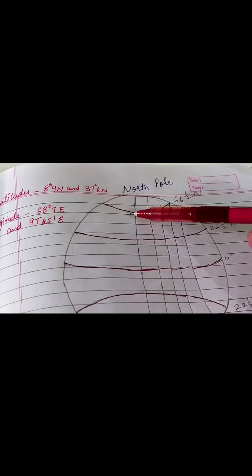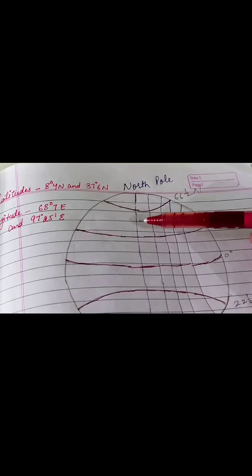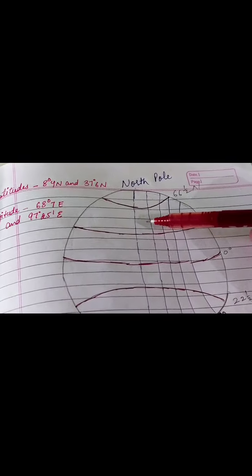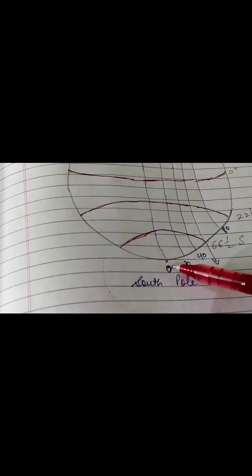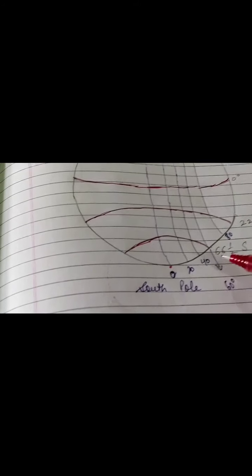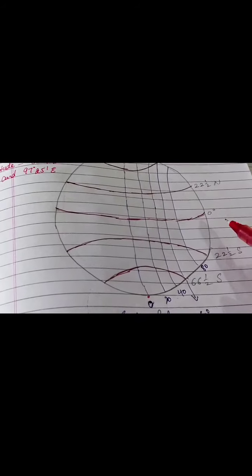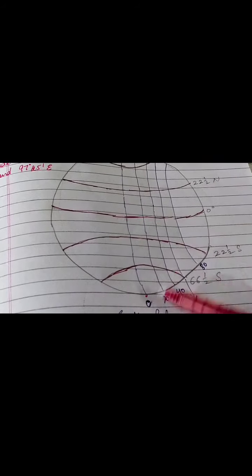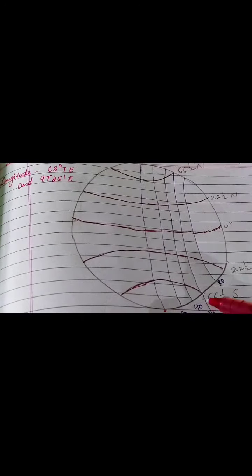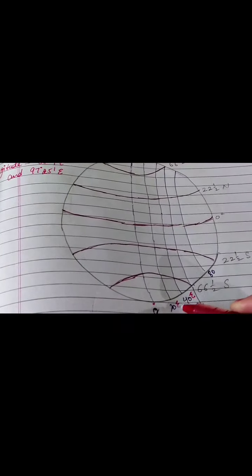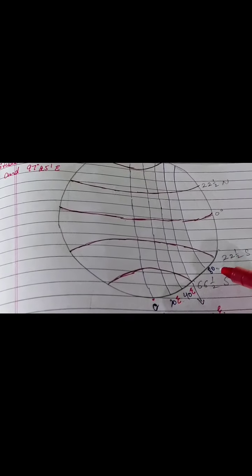This is your 0 degree. These longitudinal lines are having a difference of 20 degrees — like 0 degree, 20 degree, 40 degree, 60 degree, 80 degree. When we are going this side, we are calling it east — 20 degree east, 40 degree east, 60 degree east. We add E, which means east.